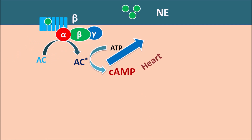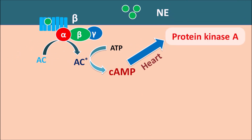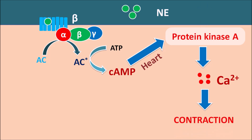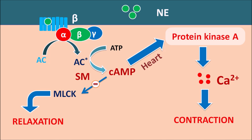Within the heart, raised levels of cyclic AMP activate protein kinase A enzymes, which are phosphorylating enzymes that increase intracellular calcium within the heart. When calcium levels increase, calcium binds with troponin, removing the block between actin and myosin, which brings about contraction of the cardiac muscle. At the same time, raised levels of cyclic AMP within smooth muscle can inactivate the enzyme MLCK — myosin light chain kinase — which is important for contraction. When these kinase enzymes are inactivated, it results in relaxation of the smooth muscle. In this way, cyclic AMP produces contraction in cardiac muscle but relaxation in smooth muscle.